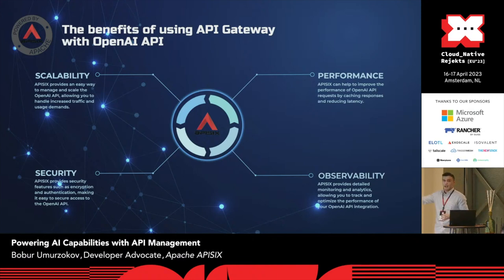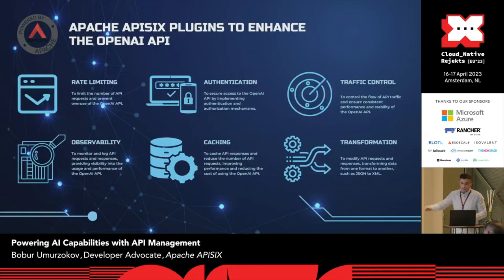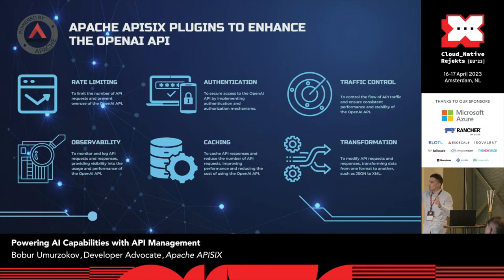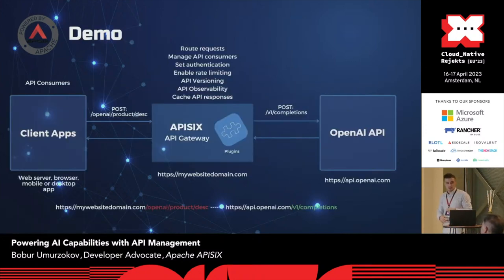The most important benefit is security — how you can secure your ChatGPT plugin APIs or OpenAI APIs using API management. You can achieve that with the help of plugins. I listed six main plugins including transformation, caching, and so on.